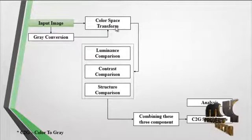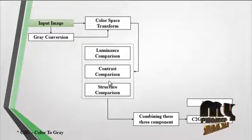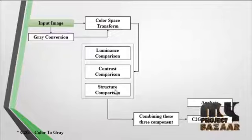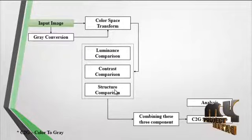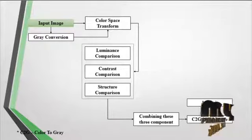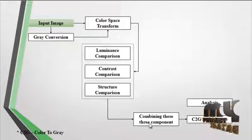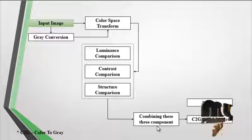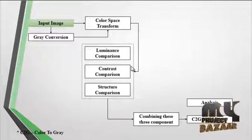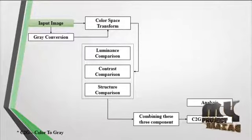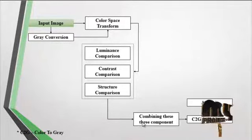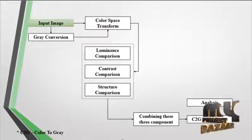In the color transformed image, the luminance comparison, contrast comparison, and structure comparison are carried out. These three are the major modules for the color space transformation. After these three modules, combining the components is carried out. Combining the components means concatenating these three actions, and then the color to gray SSIM image is the final output from combining the three channels.